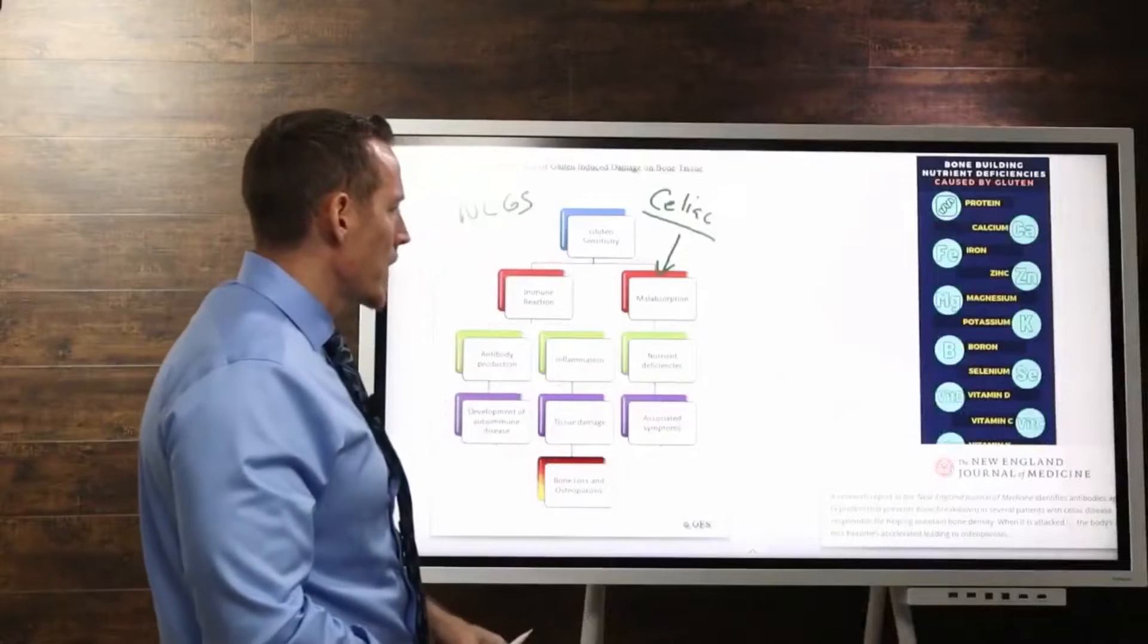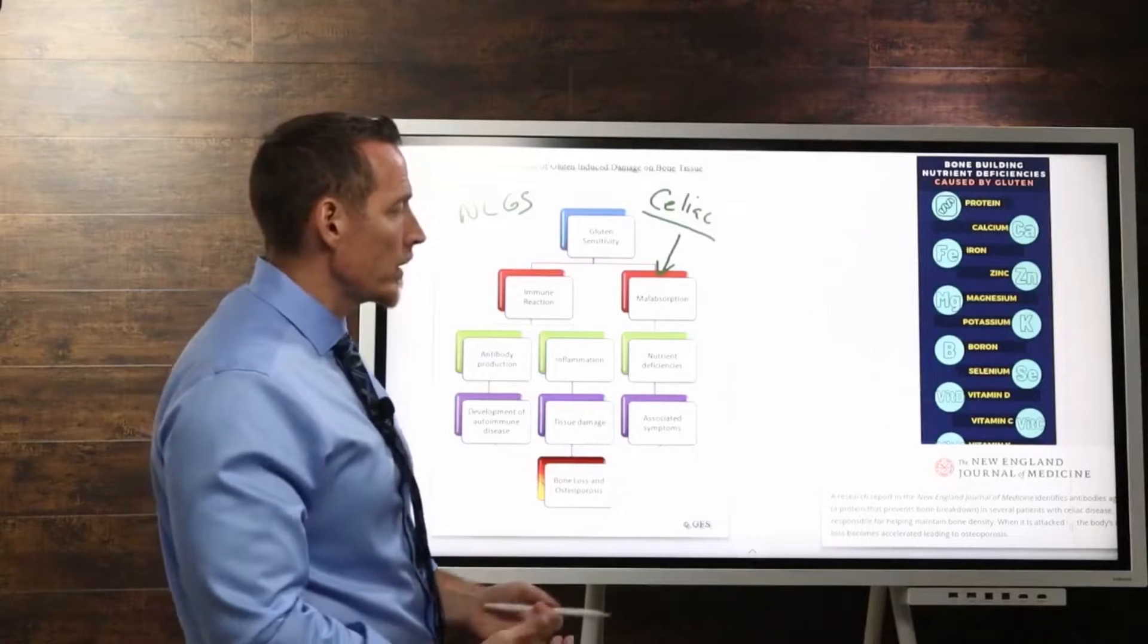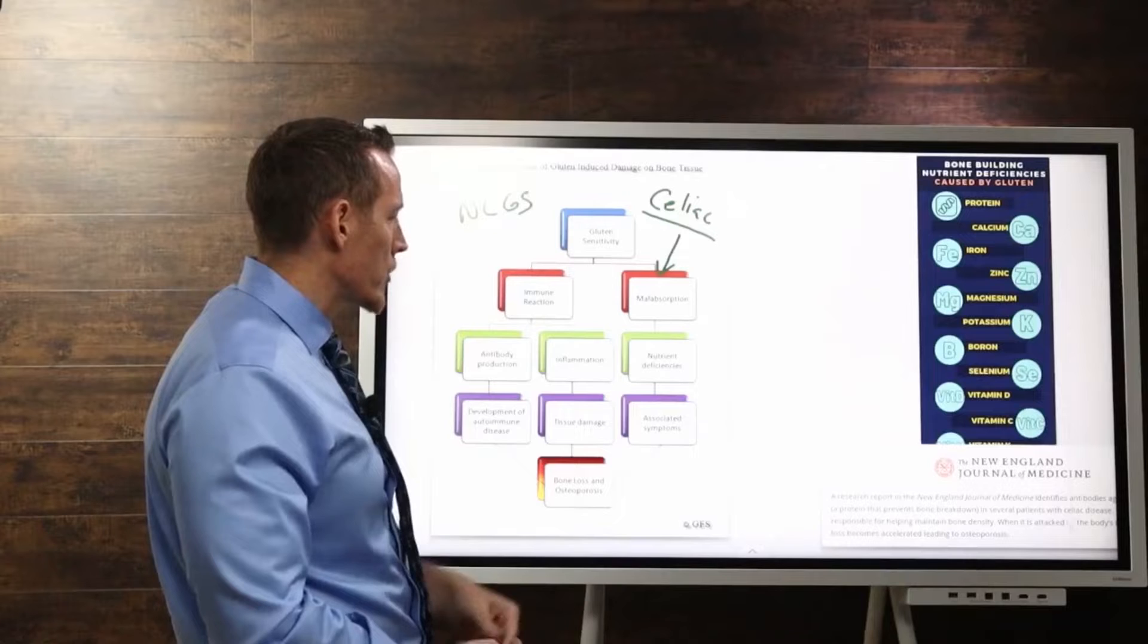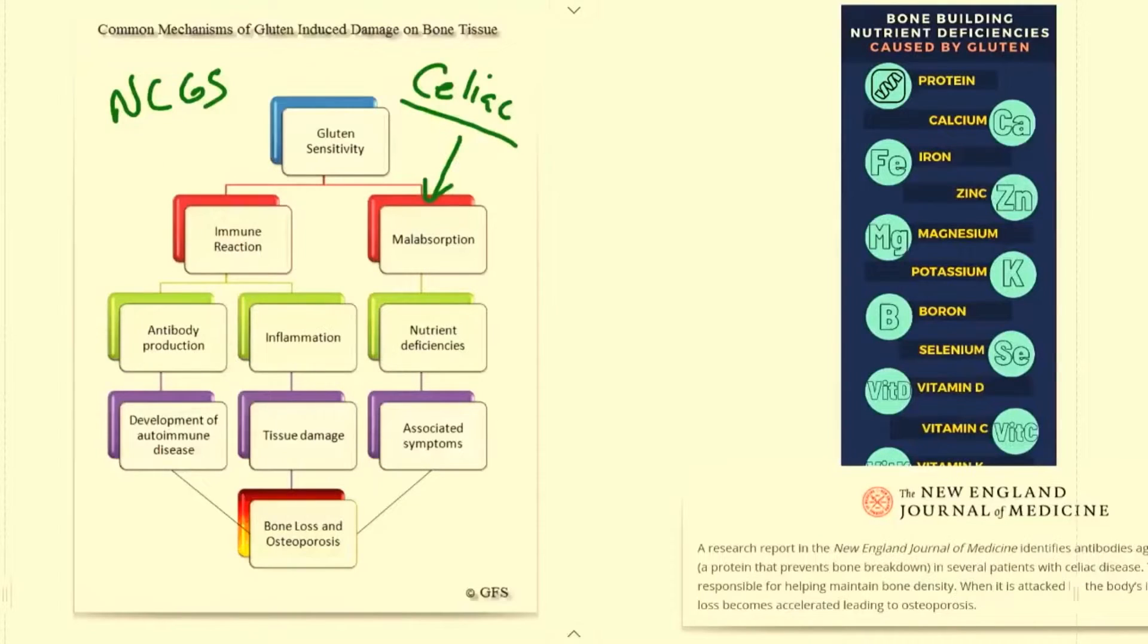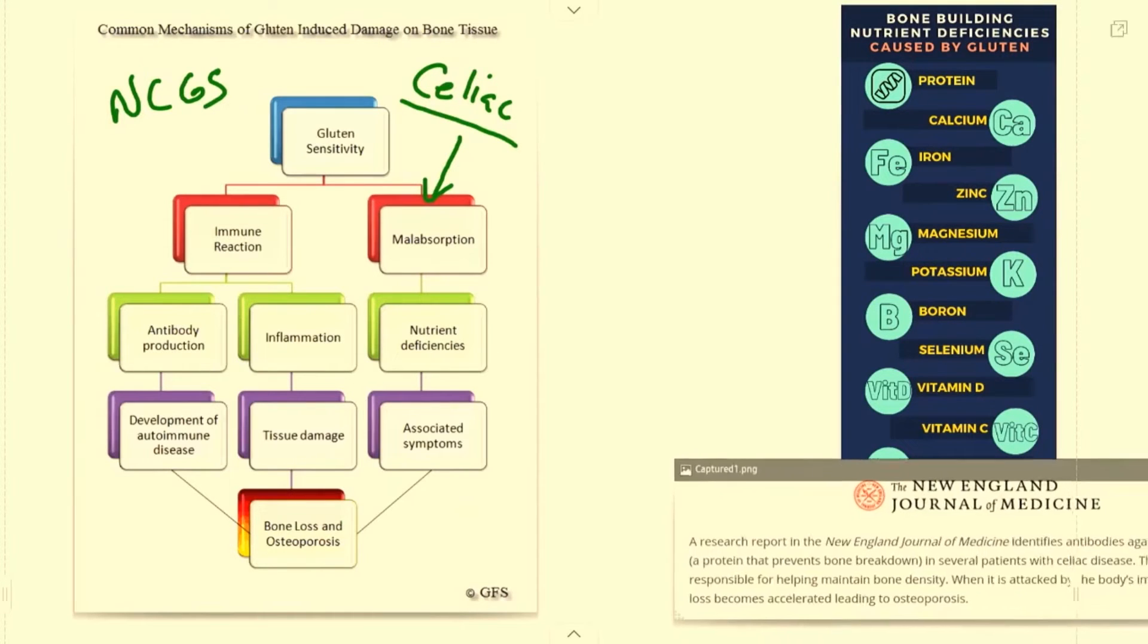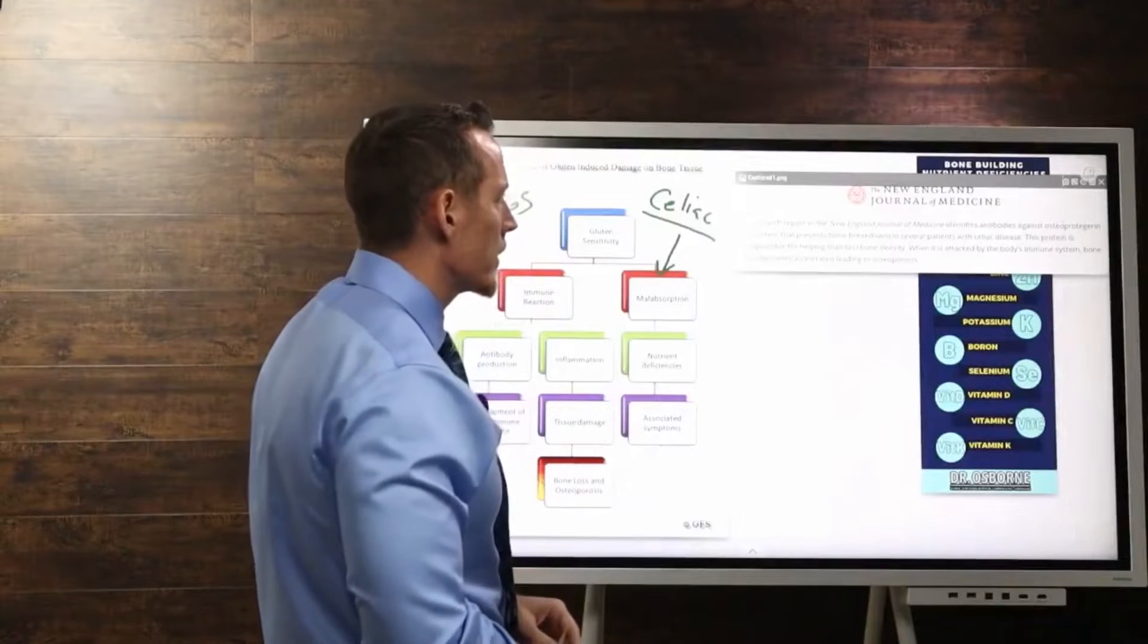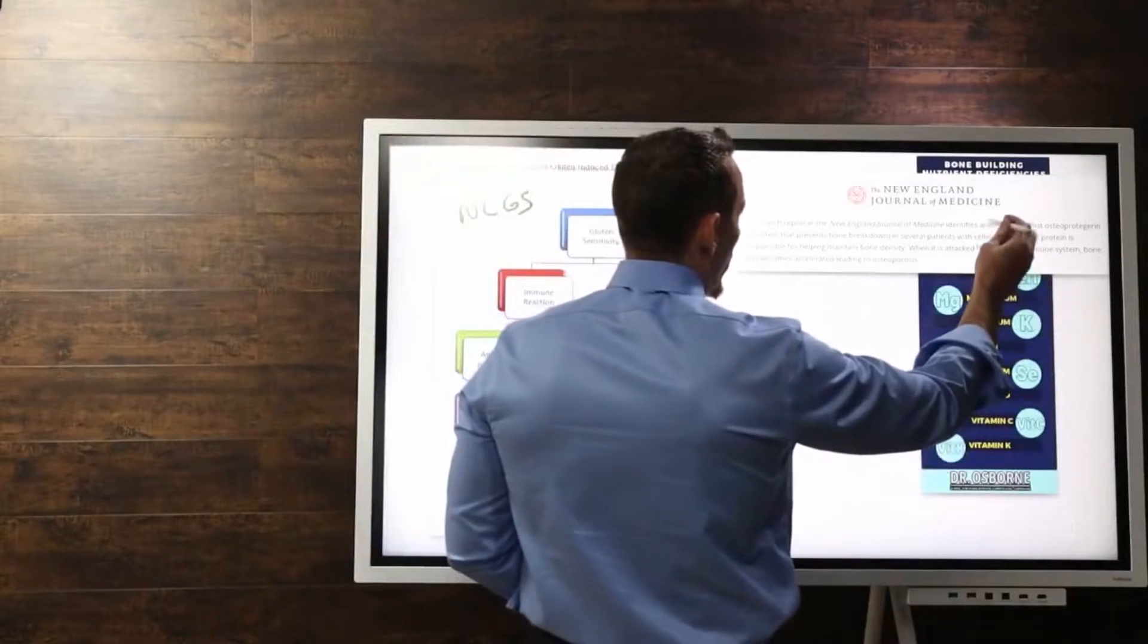It's the villus atrophy that causes the malabsorption which leads to nutrient deficiencies and subsequently leads to the inability for your body to mineralize the bone appropriately. Celiac disease is largely studied and we know it's linked to malabsorption, but there's new information that's come out recently published in New England Journal